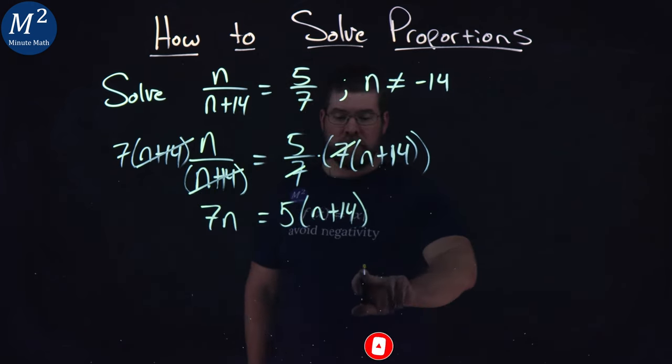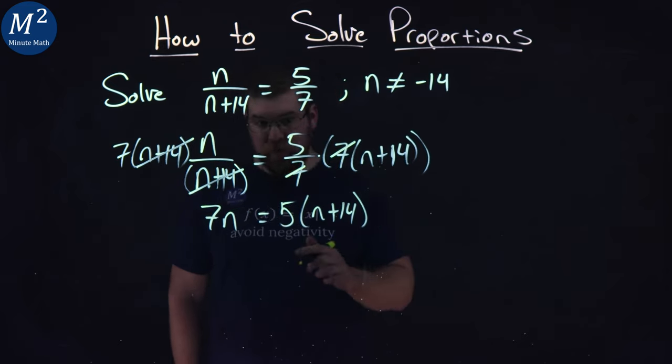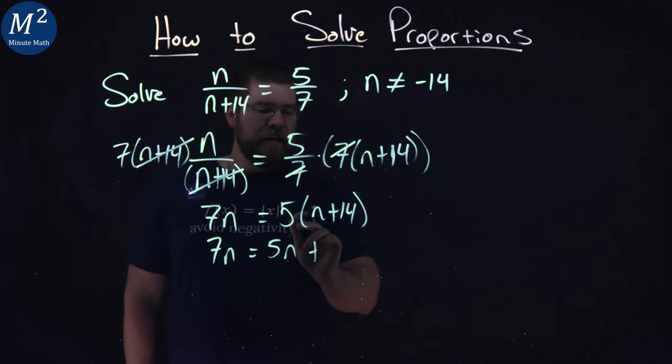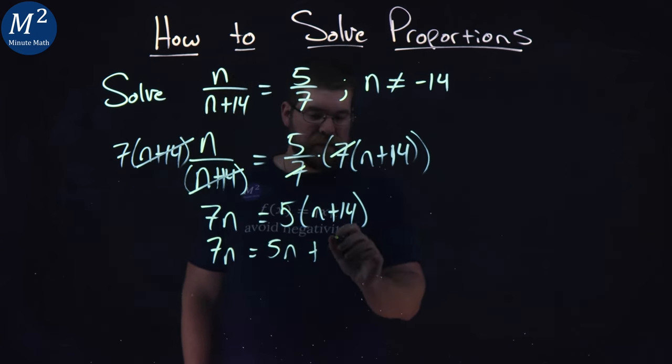From here, well, we want to simplify this and get n by itself. So 5 times, we'll skip 7n here, but 5 times n is 5n, and 5 times 14 is 70.